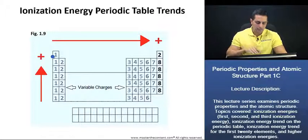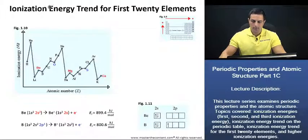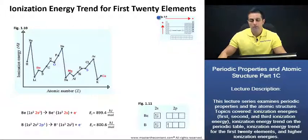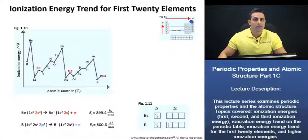Let's delve a little deeper now and take a look at figure 1.10. On the previous slide, we had stated that the ionization energy increases to the right going across a row, and one irregularity in that trend we can actually see.